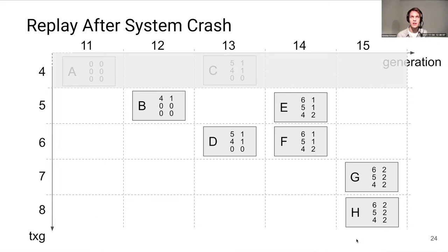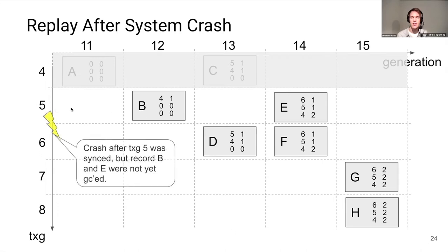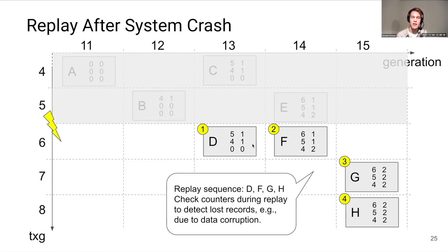Now let's put the counters to use to exercise the replay code path. Suppose we crashed after writing transaction group five but before it was garbage collected. The records that need replay are D, F, G, and H — we ignore B and E even though they are still present, because their changes are already part of the main data structure. Attempting to replay them would fail since the replay actions encoded in those records are not idempotent. Our plan is to replay D, F, G, and H, and use the counters to detect lost records along the way.